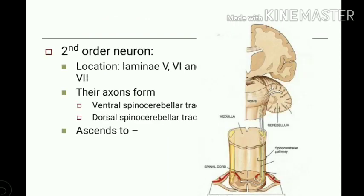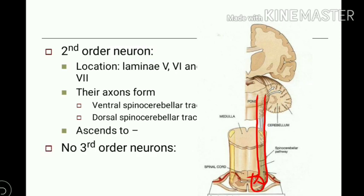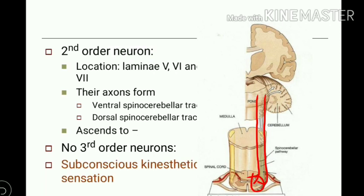Second order neurons for this tract arise from the dorsal horn, from lamina 5, 6, and 7. Their axons form the spinocerebellar tracts. There are mainly two spinocerebellar tracts — ventral and dorsal — and they ascend to the cerebellum. These tracts do not have third order neurons to the cerebral cortex, and therefore they are concerned with subconscious kinesthetic sensation.